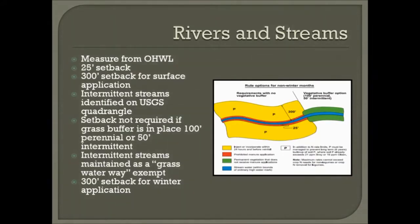Rivers and streams have specific setbacks, measured from the ordinary high water level. If you inject manure, there's always a 25-foot setback from the ordinary high water level of the stream or river.